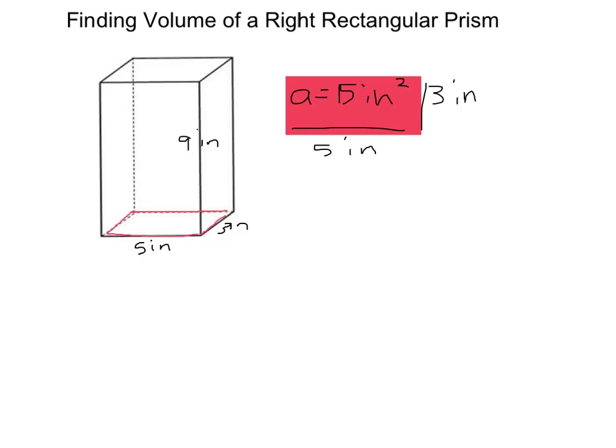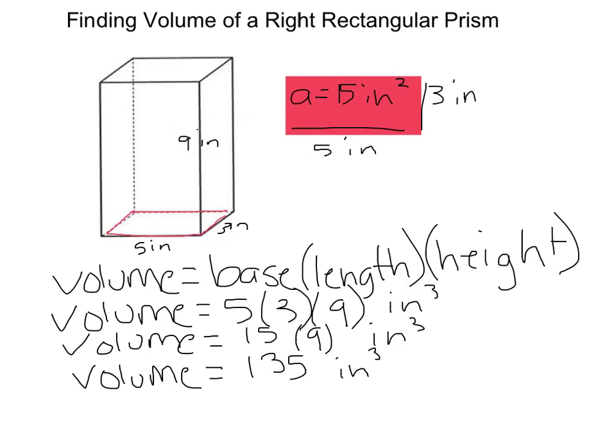Just like with the cube, I'm going to multiply the area of my base times the height of my right rectangular prism to get the volume of the entire prism. So the volume here is going to be fifteen times nine. So the total volume of my right rectangular prism is 135 cubic inches.